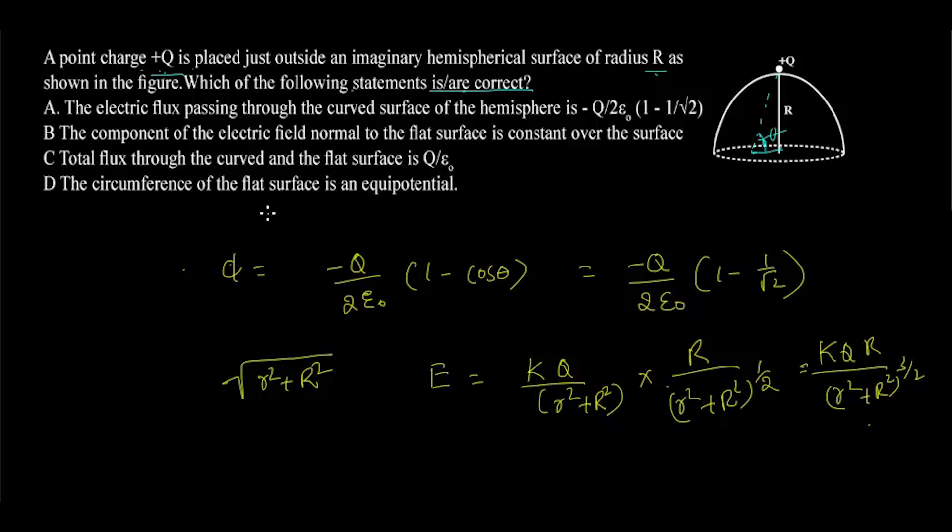Let us see about option D. The circumference of the flat surface is an equipotential. Since the circumference of the flat surface is equidistance from the charge Q at any point, or the distance of any point from charge Q on the circumference of the flat surface is given by square root of R square plus R square that equal to root 2 times R. Or the potential at any point on the circumference of the flat surface is given by KQ by root 2 times R. This potential is equal at any point on the circumference. Now the option D is true.